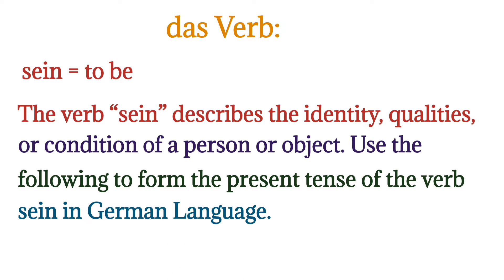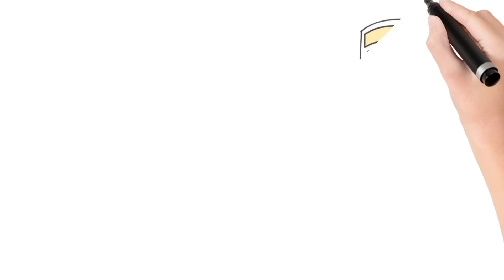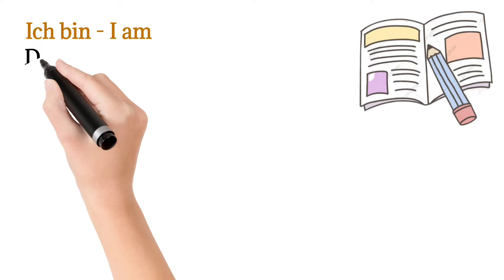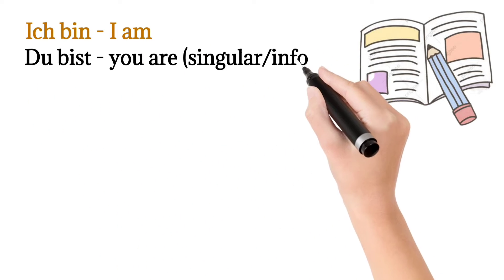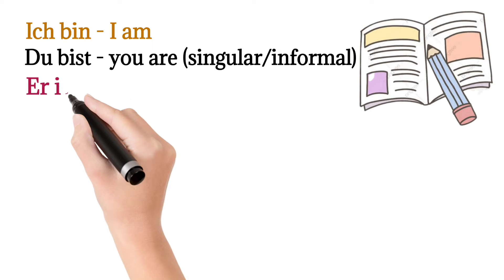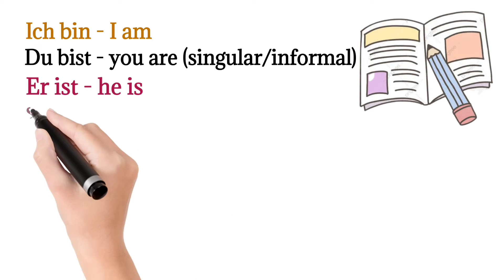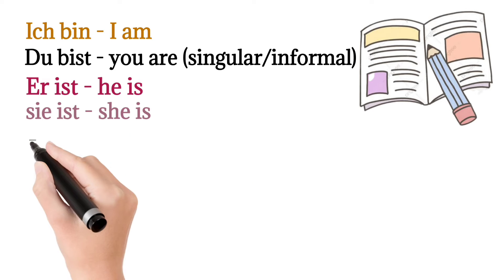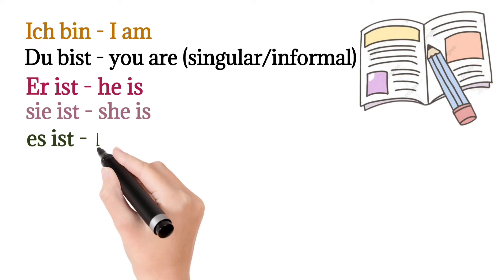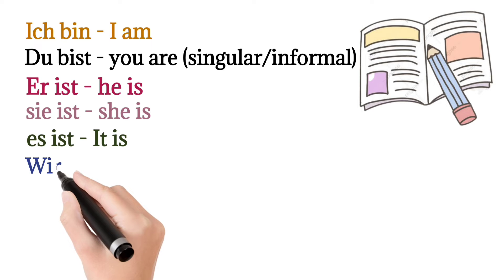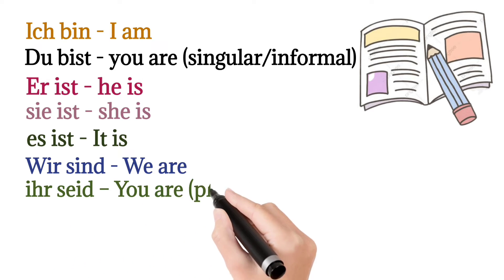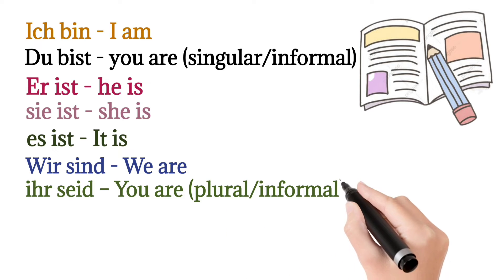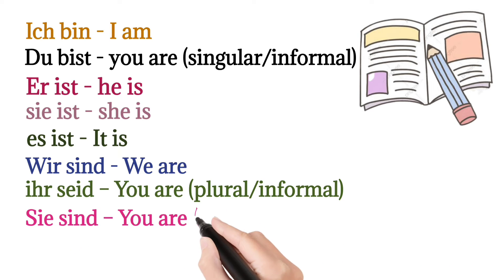The verb conjugation for 'sein' in German language: ich bin — I am; du bist — you are; er ist — he is; sie ist — she is; es ist — it is; wir sind — we are; ihr seid — you are; sie sind — they are.